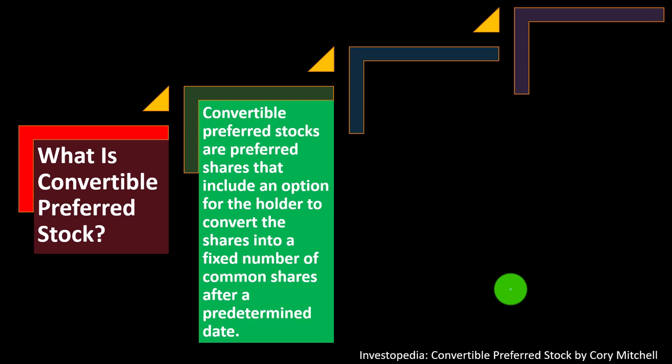Now we have the convertible component, similar to a convertible bond. Most people investing want straightforward, simple instruments. A stock is a stock and a bond is a bond — they're comparable because of their simplicity. When you add components like preferred stock, which is a hybrid instrument, it can be tricky to understand how it fits in a portfolio. Adding features like convertibility adds even more complexity, so you need to be cognizant of why you're investing in those kinds of instruments.